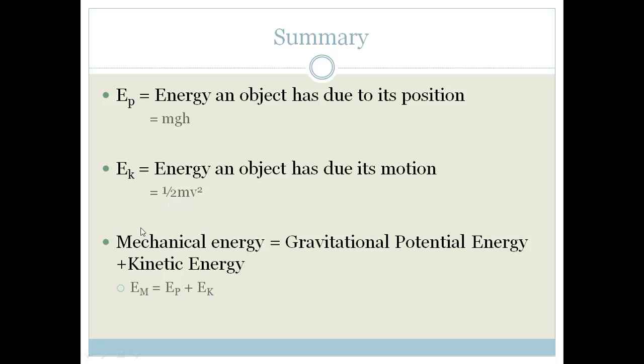And finally, remember that as far as we're concerned, assuming nothing is lost due to friction or anything weird, mechanical energy always equals the sum of the gravitational potential energy and the kinetic energy. So Em, mechanical energy, equals Ep, the gravitational potential energy, plus the kinetic energy.